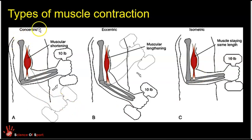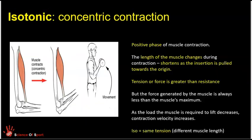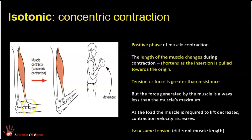Concentric contraction is where the muscle shortens during contraction and movement occurs. The way to remember this is that concentric contraction involves the ends of the muscle — the tendons — getting closer. When the muscle shortens, the insertion gets nearer to the origin. So concentric is when the length of the muscle, or the ends of the muscle, get closer.